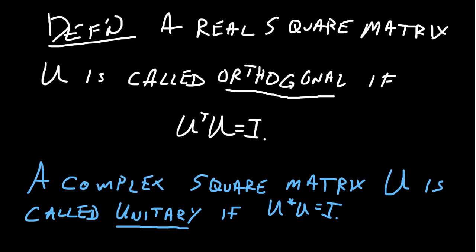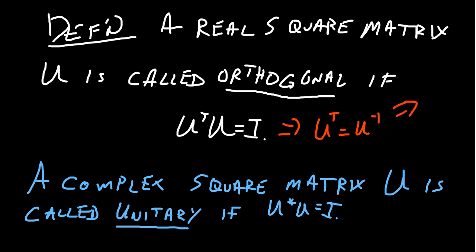I want to introduce another definition. If we have a real square matrix U, we call it orthogonal if it satisfies U transpose U equals the identity. If U transpose U equals the identity, that means U transpose is the inverse of the matrix. Since left and right inverses are the same, this also tells us that U times U transpose equals the identity. This is what we call an orthogonal matrix.